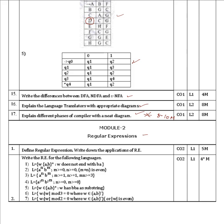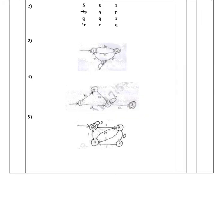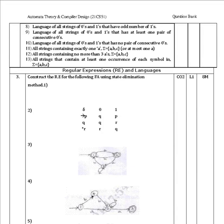In module two: define regular expression and write down the applications of regular expressions for 5 marks. Next, write regular expressions for the following languages — each question is for 2 marks, and any two questions will be asked for 4 marks total. These are from previous year question papers and the textbook.